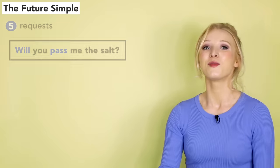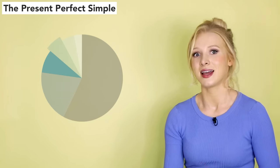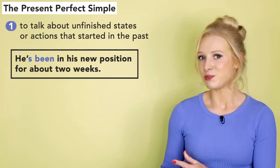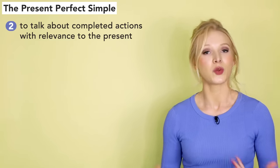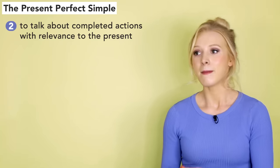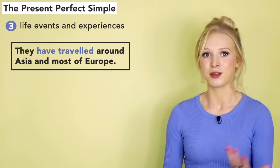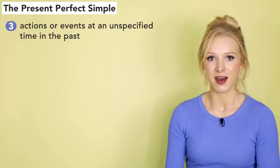Now it's time to move on from the future simple and talk about the present perfect simple. Don't let its long and slightly confusing name fool you — it's actually quite an easy tense to master. We use it to talk about unfinished states or actions that started in the past: 'He's been in his new position for about two weeks.' We use it to talk about completed actions with relevance to the present: 'My dad has just pulled up to the house.' We use it for life events and experiences: 'They have travelled around Asia and most of Europe.' And we use it for actions at an unspecified time in the past: 'Yeah, we've tried that recipe.' See? Not so bad.